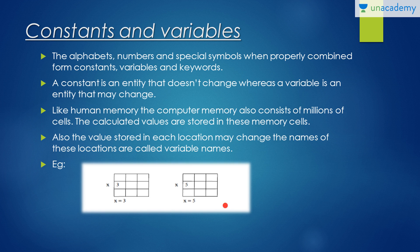Suppose this is a memory location and these small rectangles are memory cells in that particular memory location. The name of the memory cell here is X, which has been assigned the value 3. Since this is a variable, the value or the address of it can be changed — for example, substituting the value 5 in place of 3.